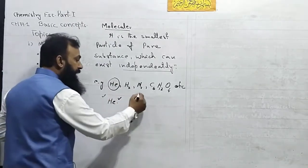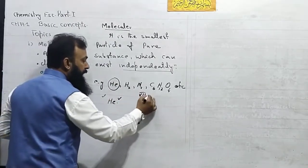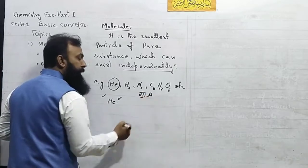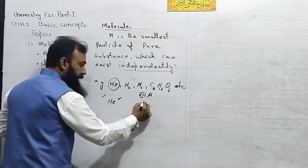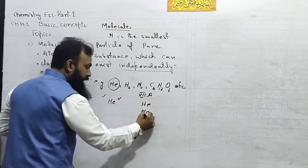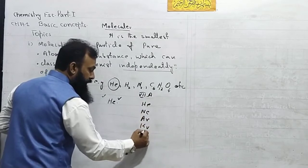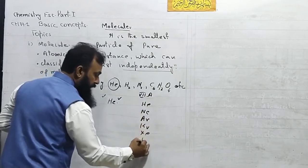Not only helium — all elements of Group 8A, which include helium, neon, argon, krypton, xenon, and radon, can exist independently.